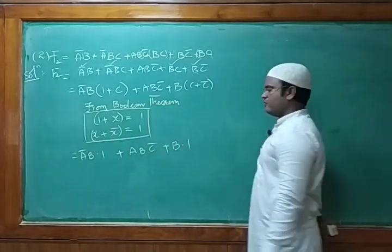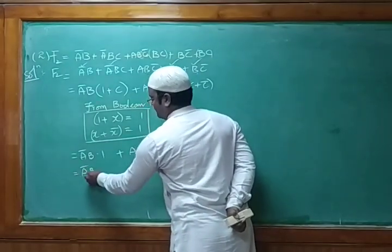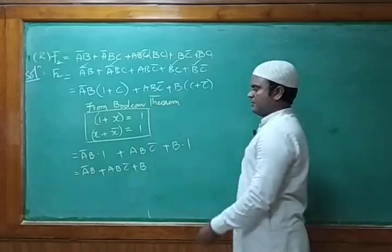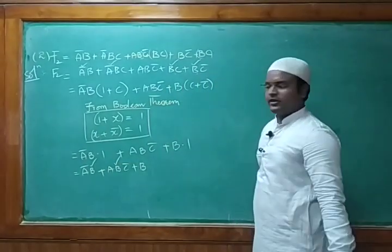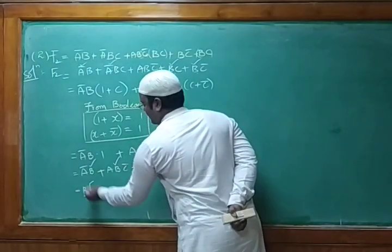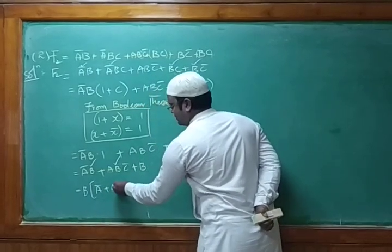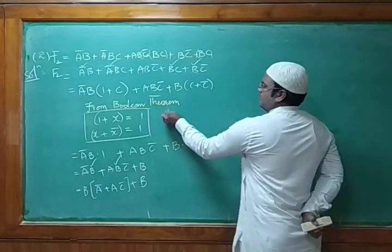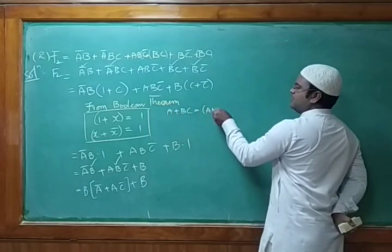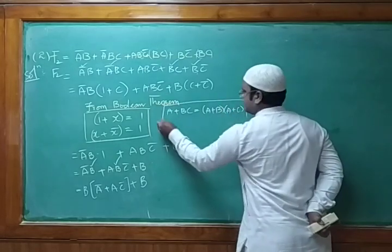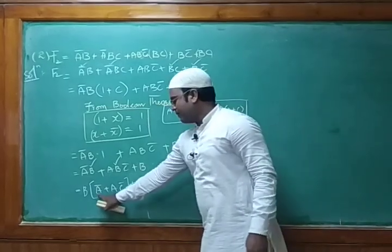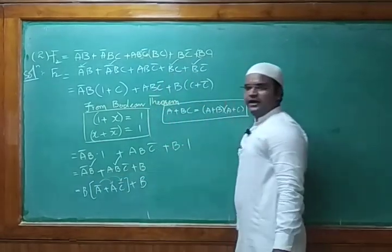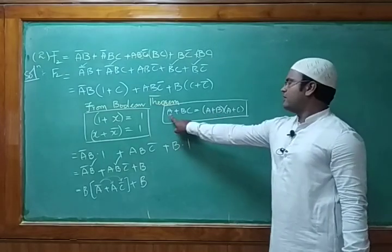So we now have f2 = ā·b + a·b·c̄ + b. Next, b is common in ā·b and b, so we take b outside: b·(ā + a·c̄) + ... wait, let's apply the absorption formula a + b·c = (a + b)·(a + c). So ā + a·c̄ can be expanded using this rule by writing ā twice: (ā + a)·(ā + c̄).